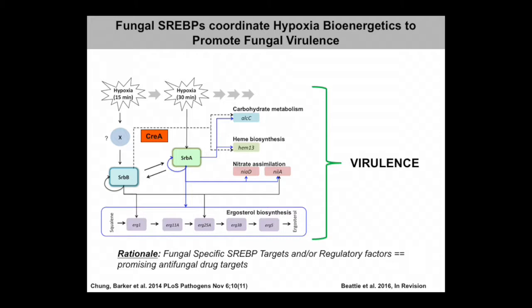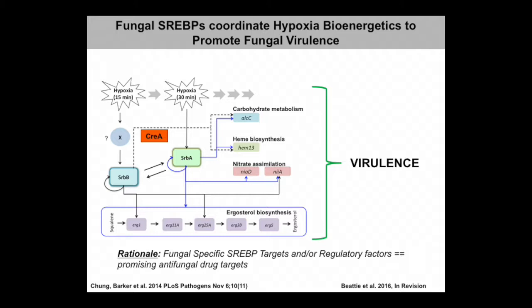In conclusion regarding SrbA, we're establishing this genetic network — what SrbA regulates, how it interacts with other pathways to confer hypoxia fitness, and importantly this is critical for virulence. There are interesting regulatory mechanisms for how this genetic network is induced. Many genes in that network are fungal-specific and could potentially be harnessed as therapeutic targets. We're particularly interested in the gene CreA, which is critical for controlling carbon and nitrogen metabolism in the fungus, and we're exploring its role in allowing the fungus to adapt to the lipid-rich environment in the lung.